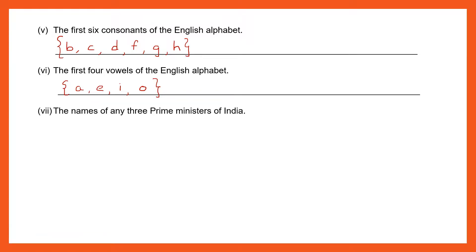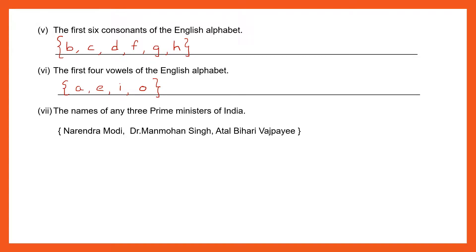Question 7: The names of any three prime ministers of India. Let's start with the present prime minister and two before. So we have Mr. Narendra Modi, Dr. Manmohan Singh, and Mr. Atal Bihari Vajpayee. Any three prime ministers you can write.